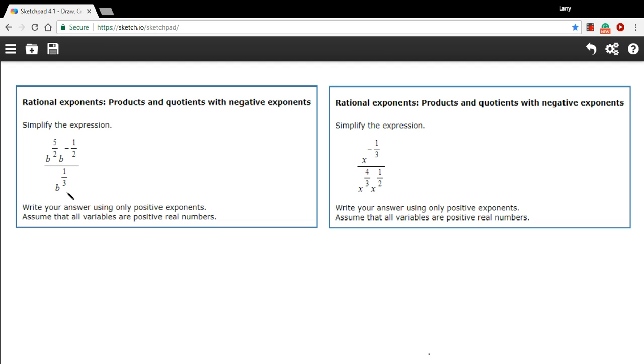The bottom here is b to the 1/3 power. That's about as simple as you could make it. The top here, we've got a multiplication problem: b to the 5/2 power times b to the negative 1/2 power.